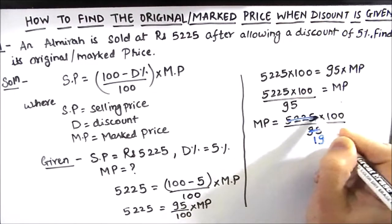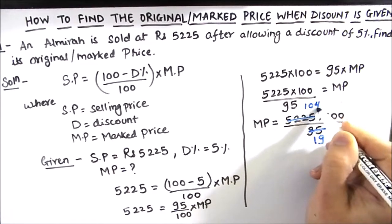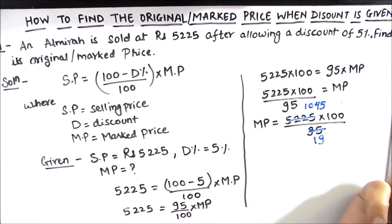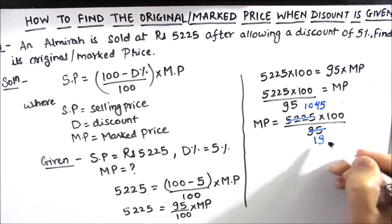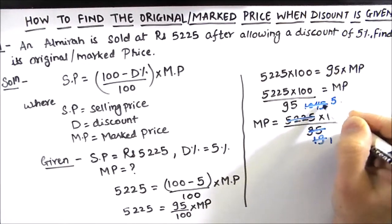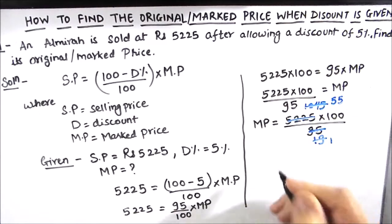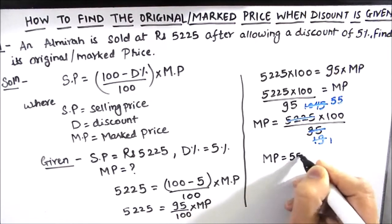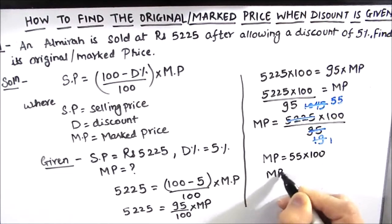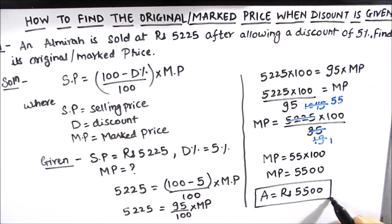We can reduce 5225 and 95 by 5, giving us 1045 divided by 19. Then 1045 divided by 19 gives 55, and 55 times 100 equals 5500. So the marked price or the original price of the almira is rupees 5500.